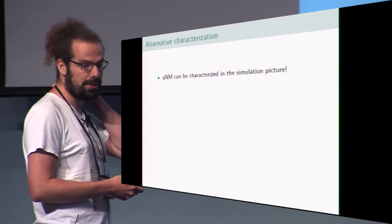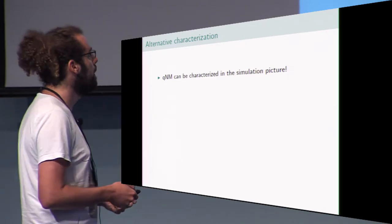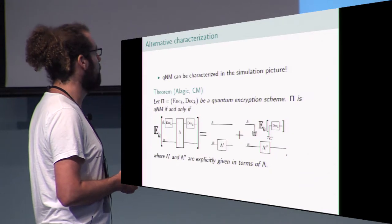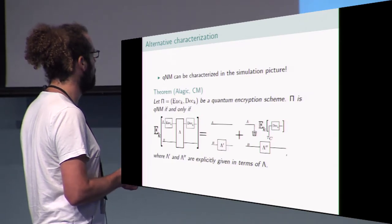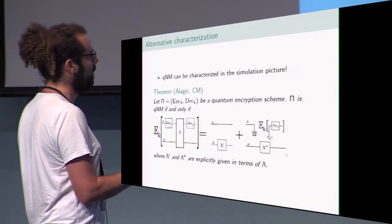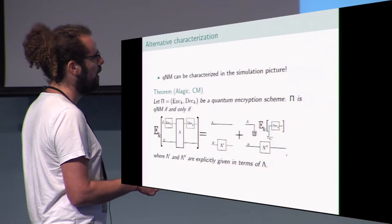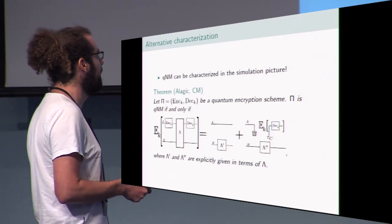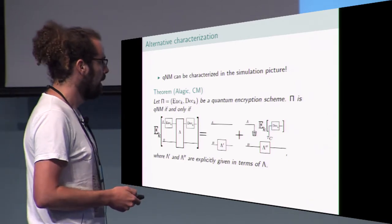We can also give an equivalent characterization giving a more practical security guarantee. We prove that a scheme is quantum non-malleable if and only if the effective map resulting from any attack map lambda has a specific form: it is a combination of the identity map and a replacement map. This replacement map discards the plaintext and replaces it by the decryption of a random ciphertext with a random key, paired with maps on the side information that Mallory can always implement.